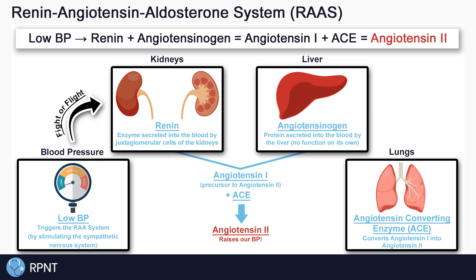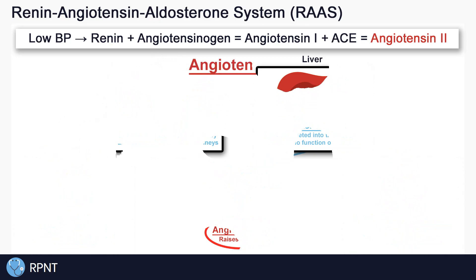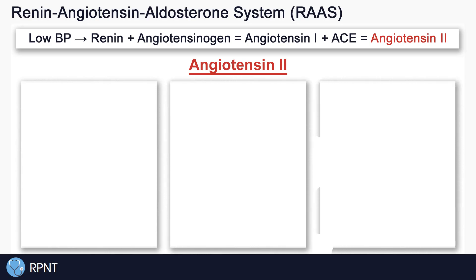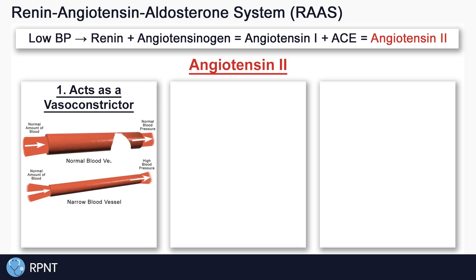Finally, the piece that we're left with is angiotensin-2, which is what this whole process is about getting to. Angiotensin-2 has three main ways of raising blood pressure. First, angiotensin-2 itself acts as a vasoconstrictor — it acts on the smooth muscle of our blood vessels, causing them to constrict or narrow, which increases blood pressure. So now we start to see how the system works, giving us our first effect of vasoconstriction, which helps to bring that blood pressure back up.